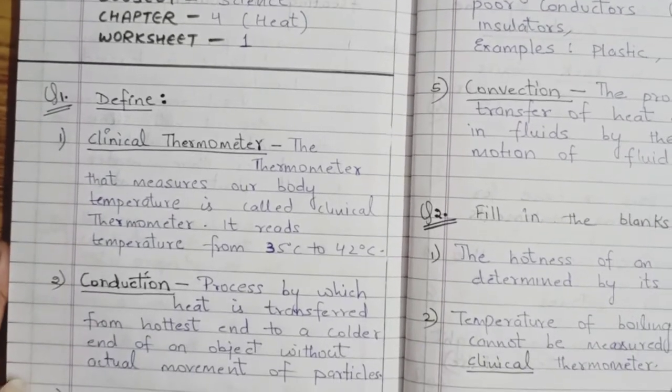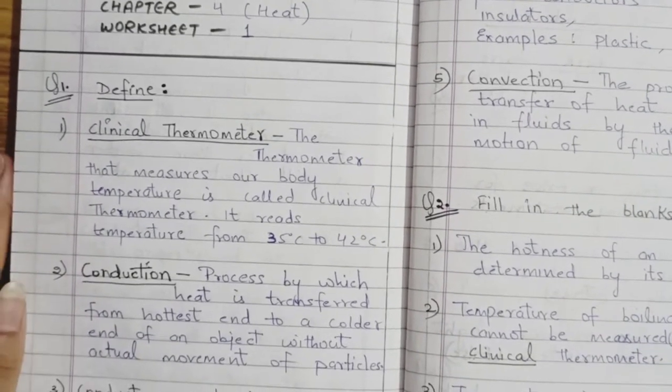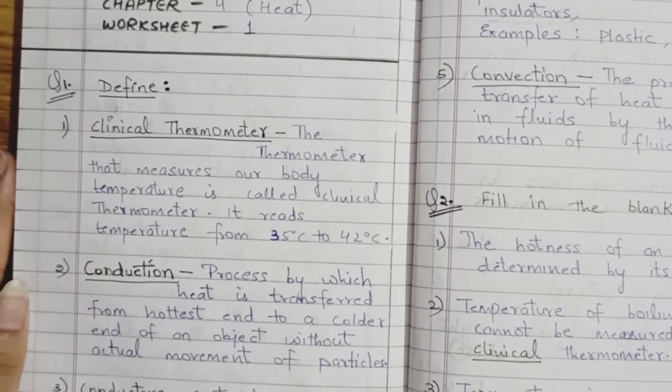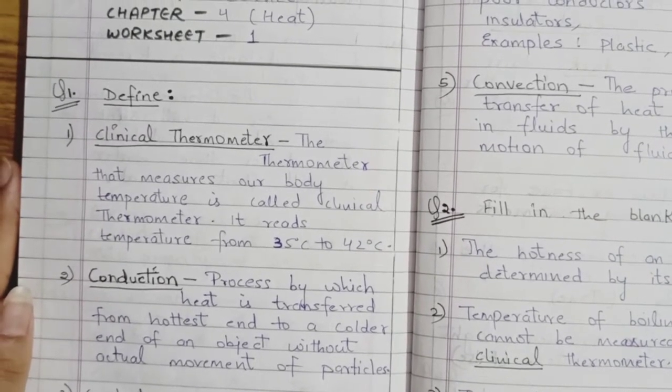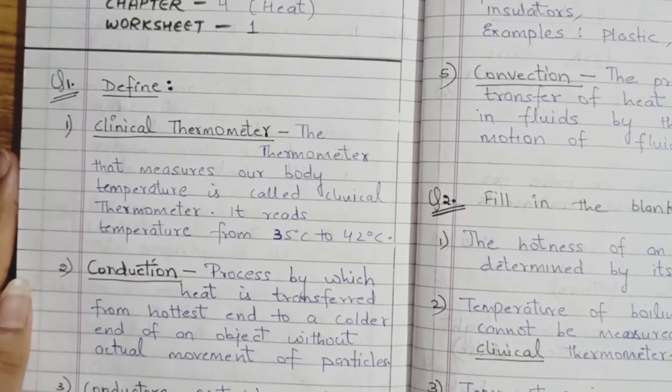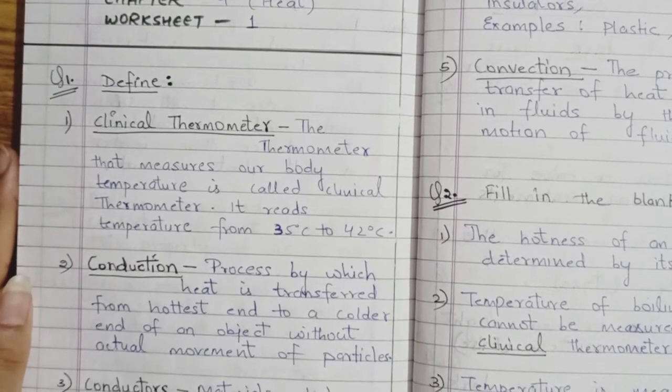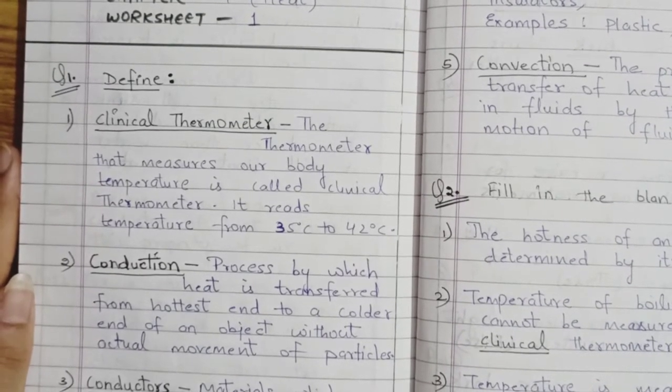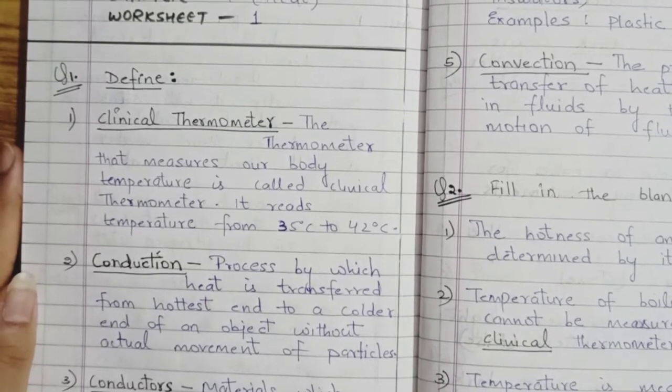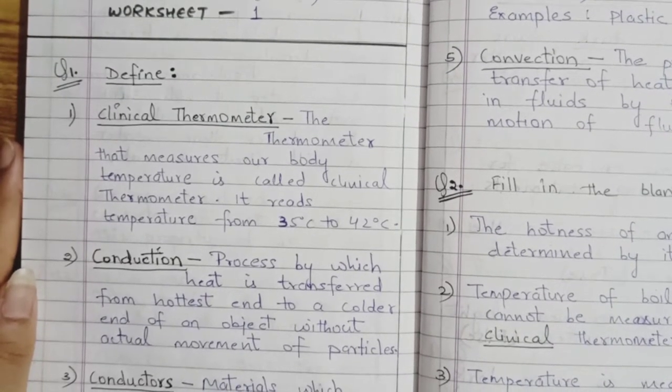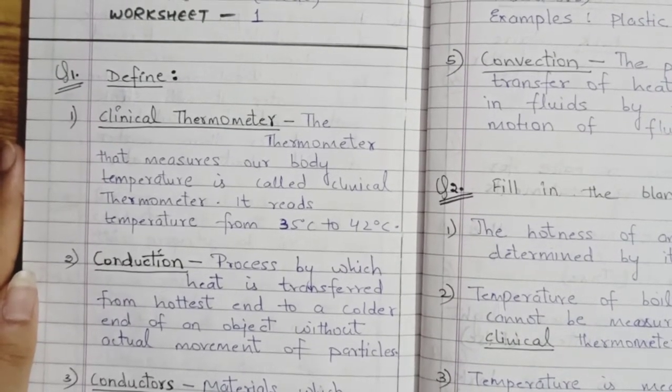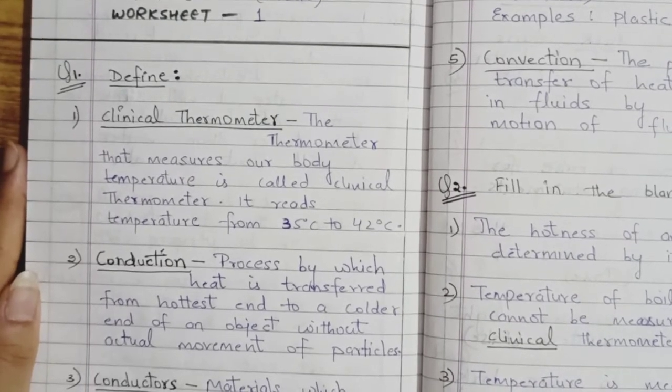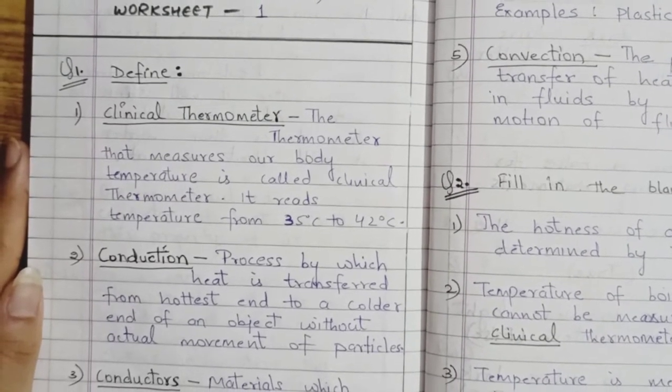The first definition is clinical thermometer. The thermometer that measures our body temperature is called clinical thermometer. It reads temperature from 35 degrees Celsius to 42 degrees Celsius.